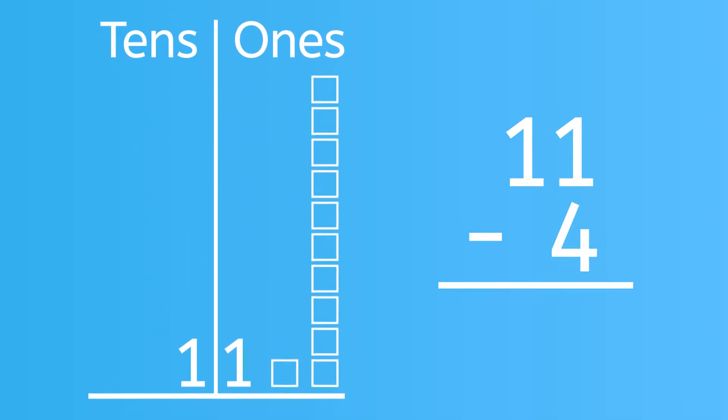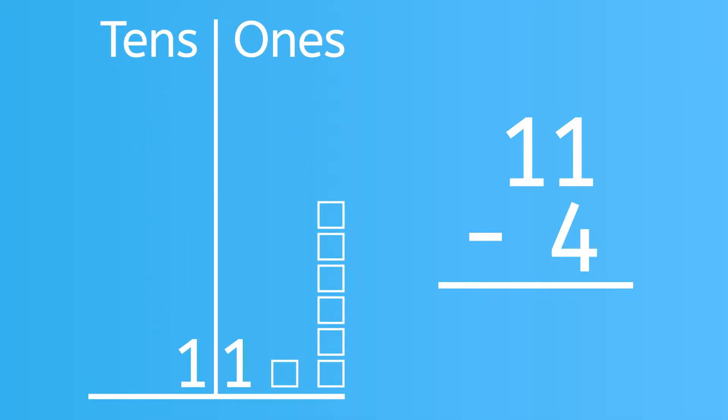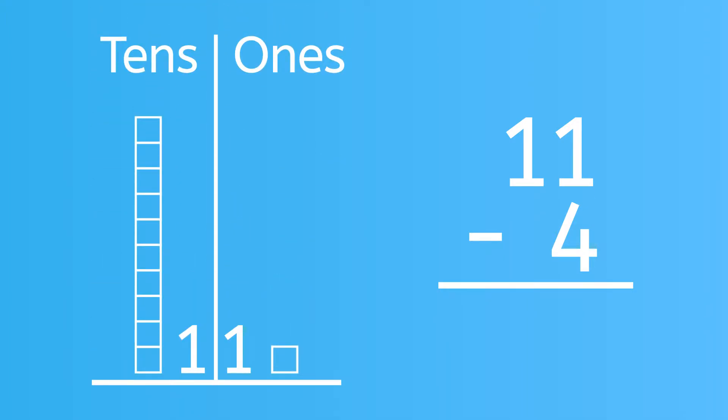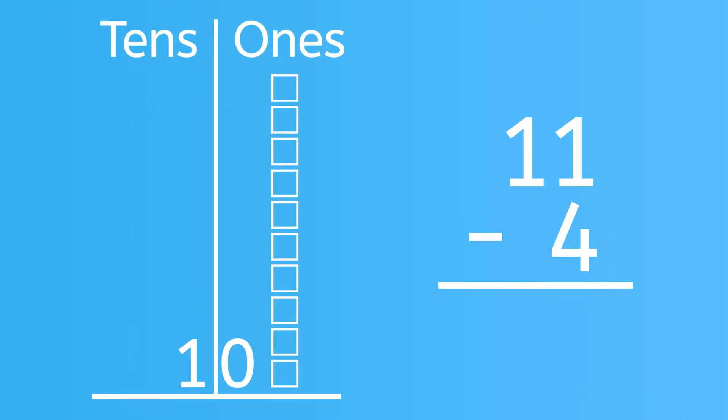We can take 4 away from 10, and then add 1. Or we can take 1 away, and then take the other 3 away. It doesn't matter how you think about this. The answer is 7.